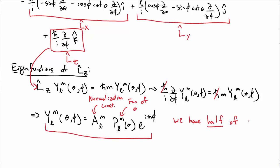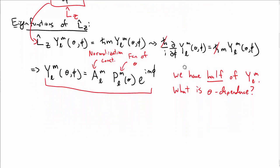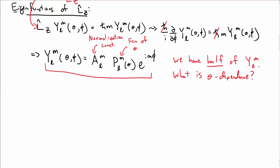So this is good. We now have half, I'd say about half, of the Y_lm eigenfunction, but now we need to know what is the theta dependence. In order to figure out the theta dependence, we're going to have to look at the operator L squared.